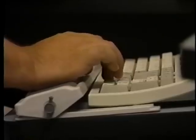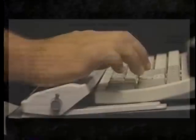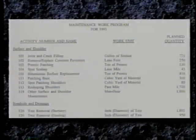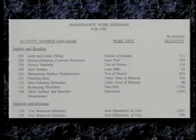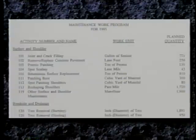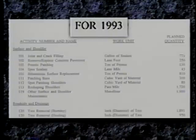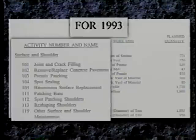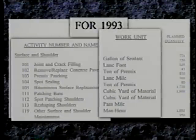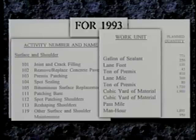The result of each method is the same — a work program showing estimates of the kinds and amounts of work to be done. A typical work program identifies the organization unit, the time period for the work program, activities and their reference numbers, a work unit for each activity, and the planned quantity for each activity.